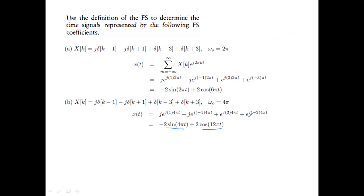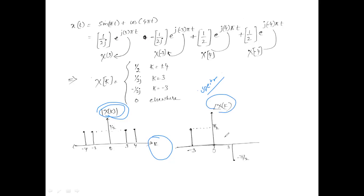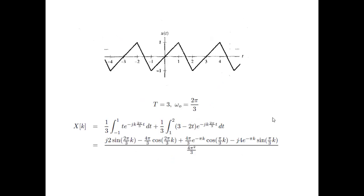The advantage of Fourier representation is it tells you exactly how many frequencies are present in a signal. The plot of frequency coefficients is called a spectrum — when the horizontal axis is frequency and you plot magnitude and phase, those are called the magnitude spectrum and phase spectrum respectively.